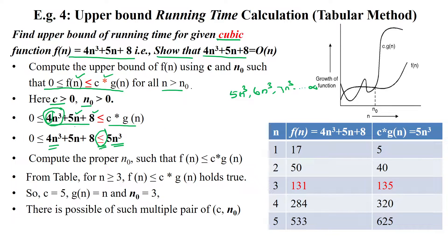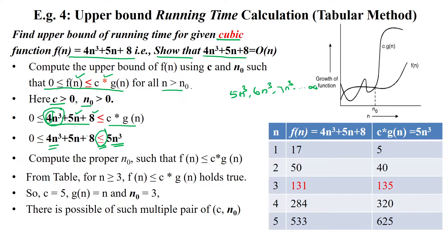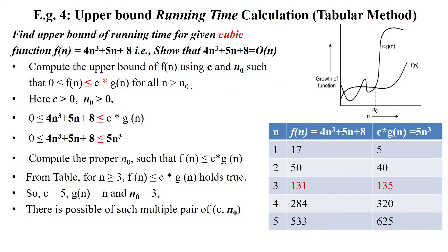If you want to substitute 4n³, because here we are using less than or equal to, you can use 4n³ instead of 5n³, since we are using less than or equal to 4n³. In this example, we are taking the next term 5n³, and substituting values from n = 1 onwards.